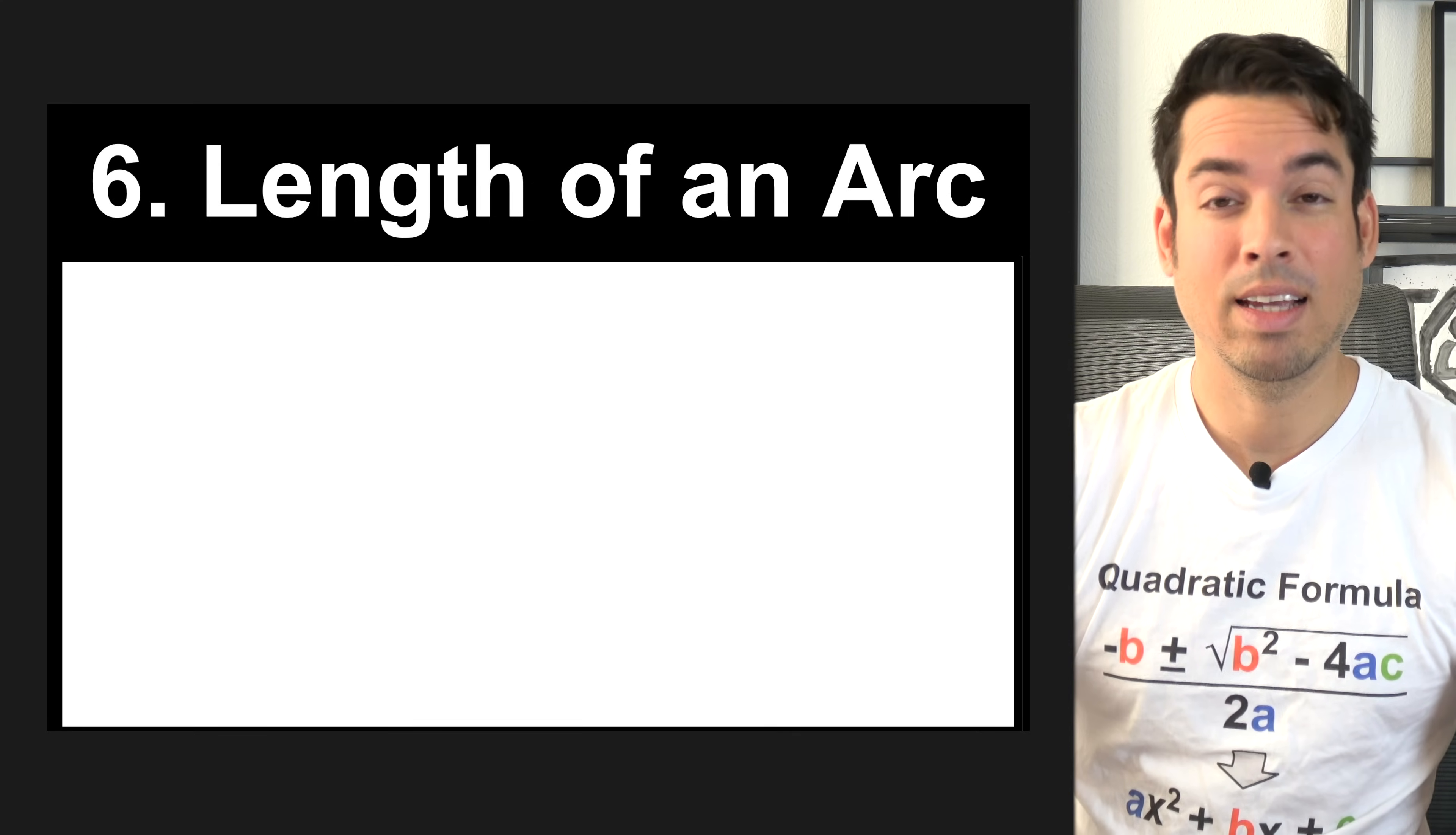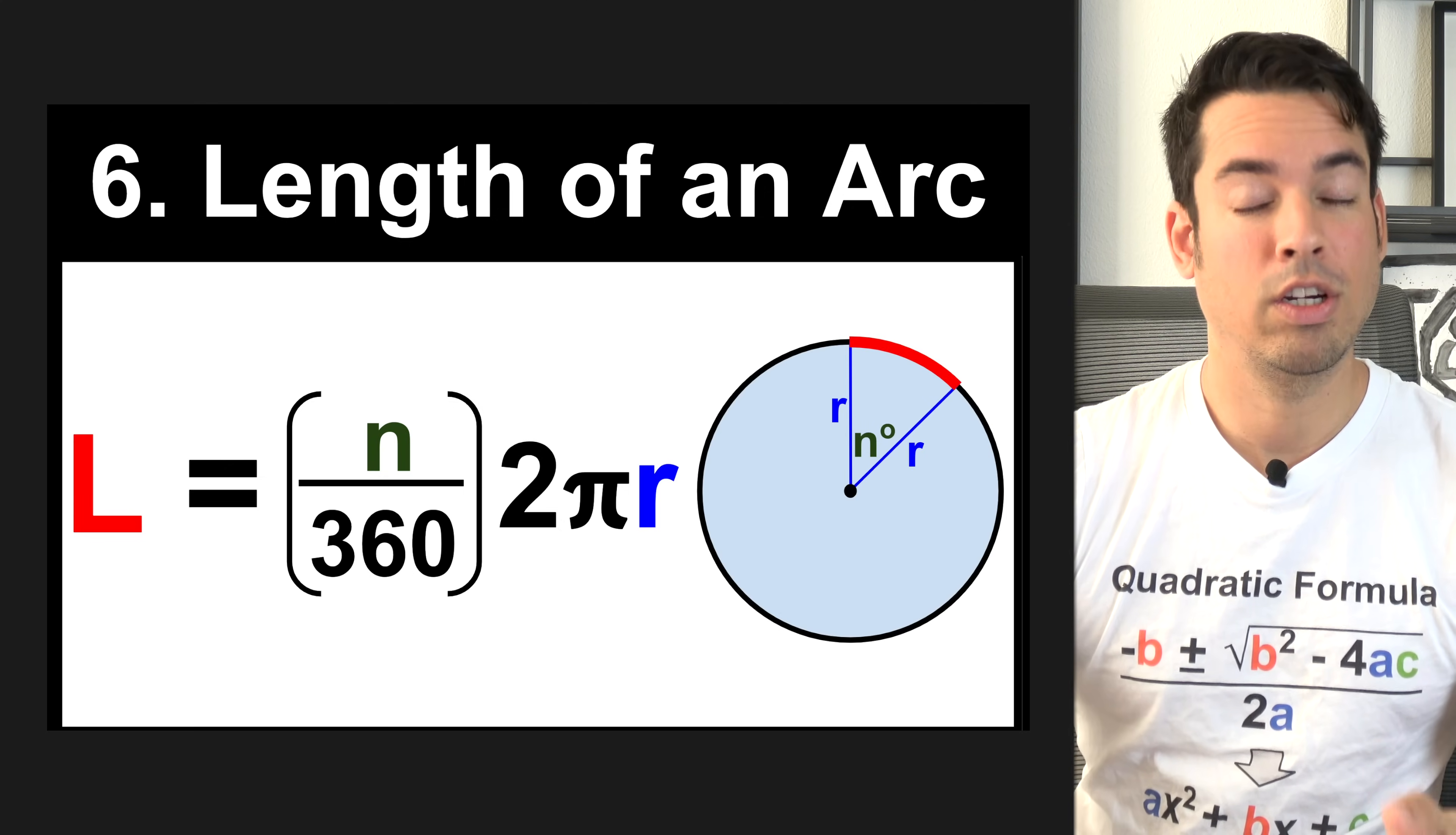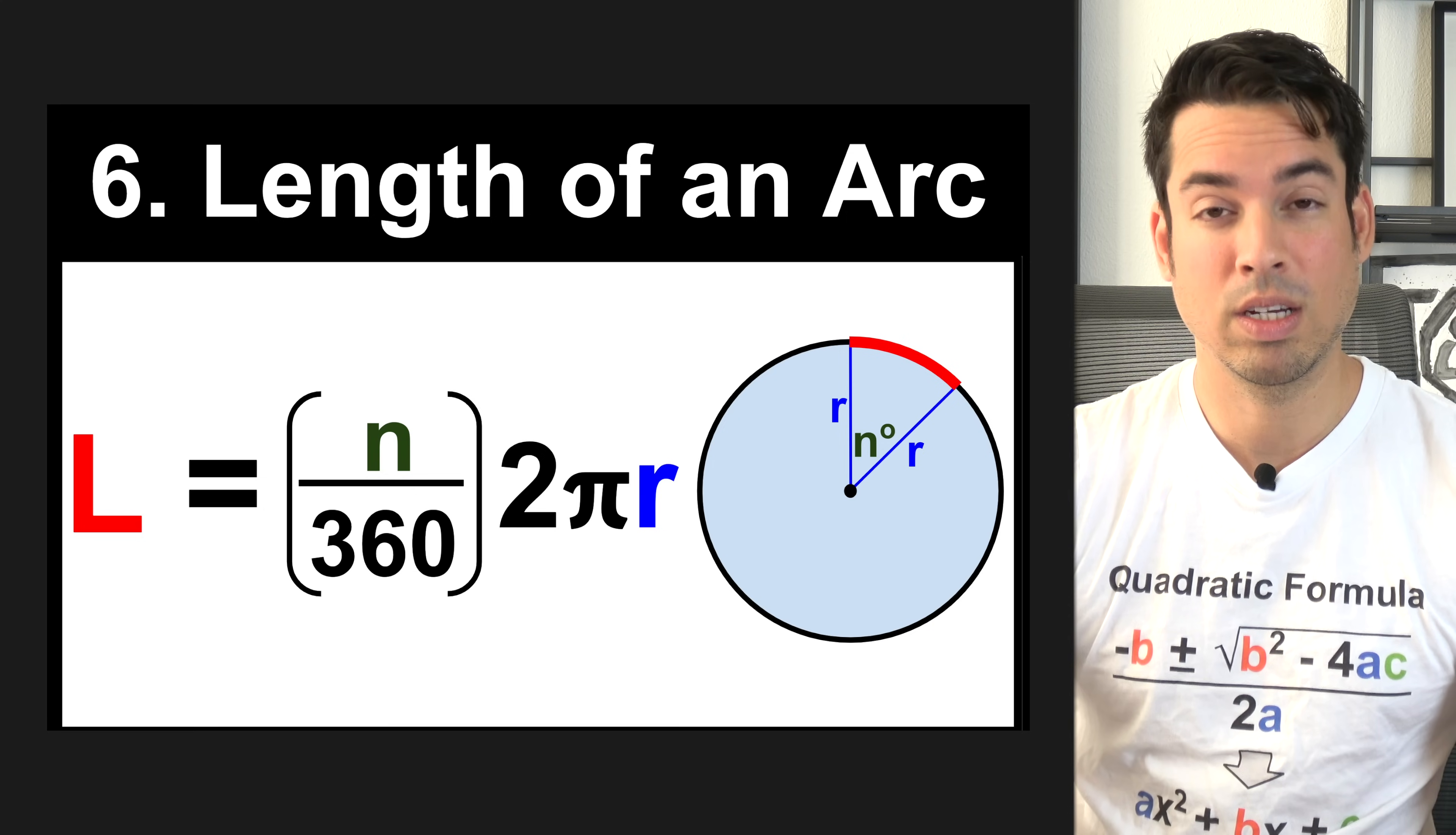Next, we have the formula for the length of an arc of a circle. This formula is n over 360 times 2 pi r, where n is the central angle, and 2 pi r is the formula for the circumference of a circle. If we look at a circle here, n is the central angle in degrees. That's why we have 360 on the denominator, and r is the radius. By the way, if this was in radians instead of degrees, you'd have n over 2 pi, as 2 pi radians equals 360 degrees.